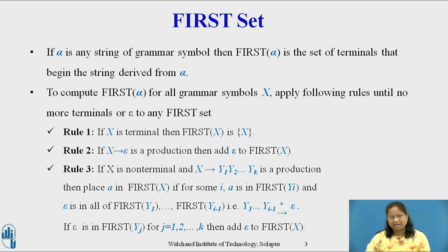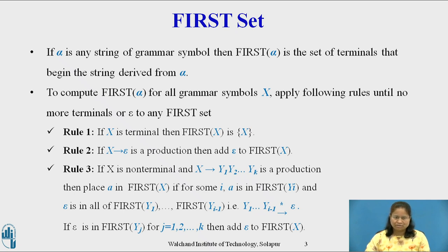To compute First for any string Y1 Y2 ... Yn, add to First(Y1 Y2 ... Yn) all non-epsilon symbols of First(Y1). Also add the non-epsilon symbols of First(Y2) if epsilon is in First(Y1), the non-epsilon symbols of First(Y3) if epsilon is in First(Y1) and First(Y2), and so on. Finally, add epsilon to First(Y1 Y2 ... Yn) if for all i, First(Yi) contains epsilon.